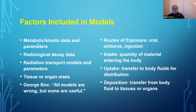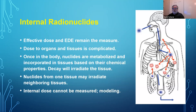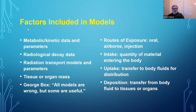One set of factors is metabolic or kinetic data — where the particular nuclides go in your body, how fast they go there, what fractions go to which area. We also need radiological decay data — how much energy is being emitted per unit time — which has a big impact on how much energy is deposited. Remember that radiation dose is energy absorbed per unit mass. And we need radiation transport models: if a gamma ray is emitted at one point in the body, how much of it makes it to other organs — from your lung to your liver or spleen?